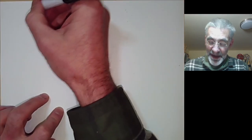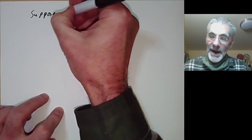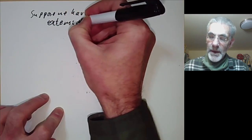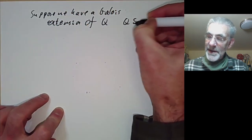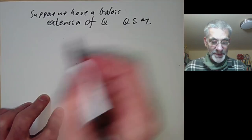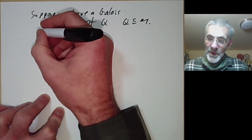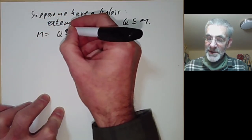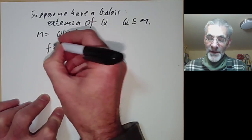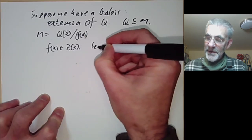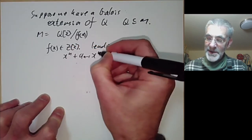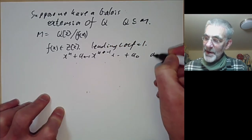Let's do the easiest case. Suppose we have a Galois extension of Q, so Q contained in M, and we assume that M is a finite extension. The problem is to find elements of this Galois group. We suppose that M is given by polynomials — we take polynomials over Q and quotient out by some polynomial F(X). We assume F(X) has integer coefficients and leading coefficient 1, so it equals X^N + A_{N-1} X^{N-1} + ... + A_0, where the A_i are integers.